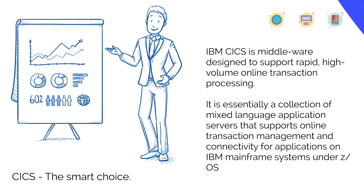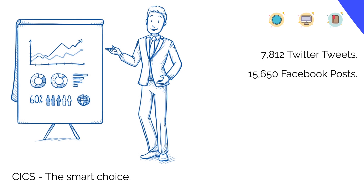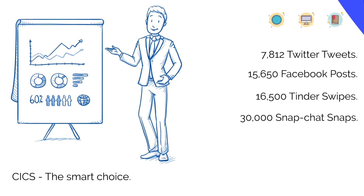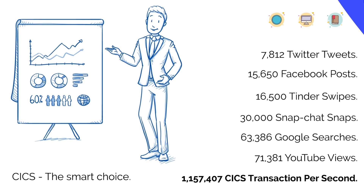Now let me share the number of transactions that CICS processes per second. But before that, let's look at what else occurs in a second: approximately 8,000 tweets, nearly 15,600 Facebook posts, more than 16,500 Tinder swipes, more than 30,000 snaps on Snapchat, more than 63,000 Google searches, and a massive 71,000 YouTube views per second. But what exactly is CICS processing per second? You'll be surprised to know that CICS is processing over a million transactions per second, every day.